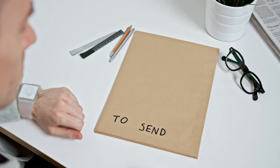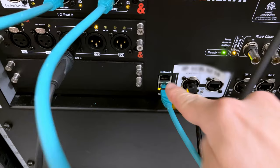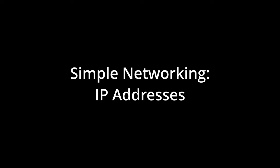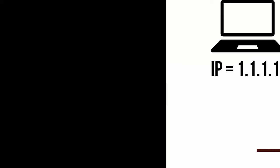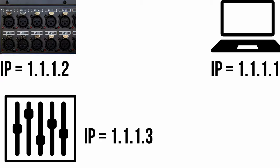Dante is more like using a mail system. You say here's some audio, and the computer program allows you to write an address on that audio and say put that audio from this stage box into that mixer over there. This ability to travel through networks makes it super flexible. They say on the website you can use existing networking, though most people have a dedicated Dante network installed.